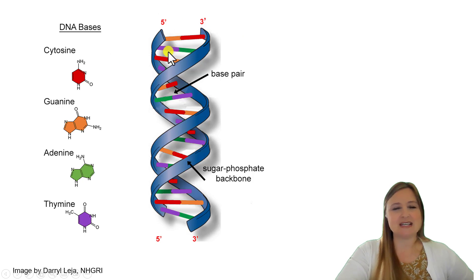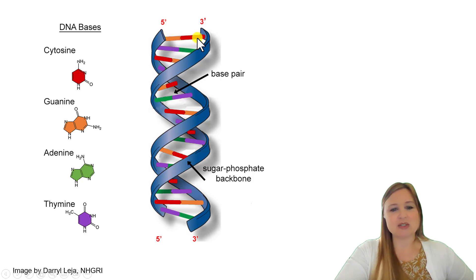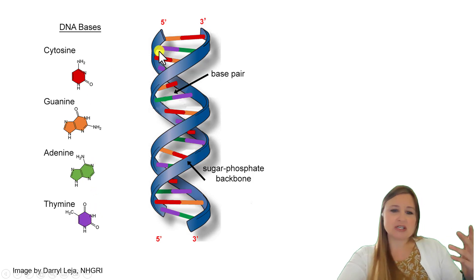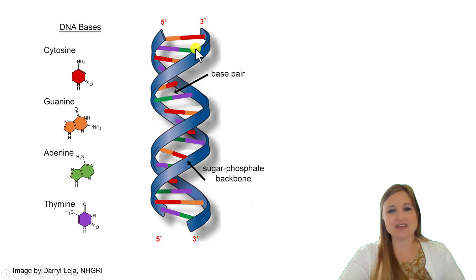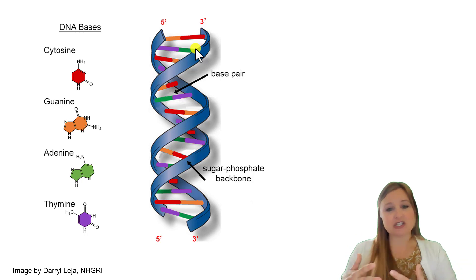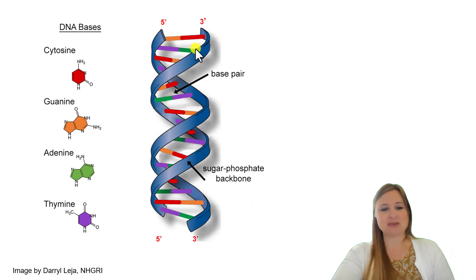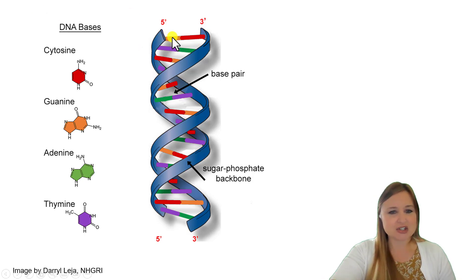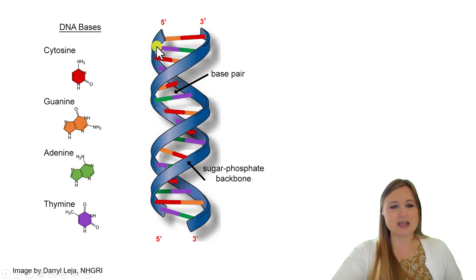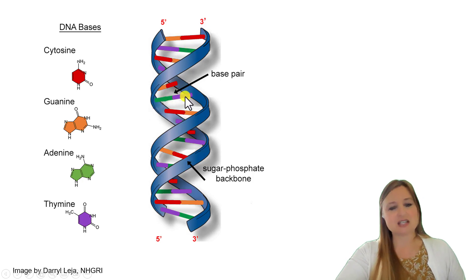Looking at the different bases of DNA: in orange is guanine, which always forms a base pair with cytosine shown in red. The purple one is thymine, so on one strand if it's thymine, it's going to be adenine on the other strand. T and A always form a complementary base pair, and C and G always form a complementary base pair — regardless of which strand guanine or thymine happens to be on.